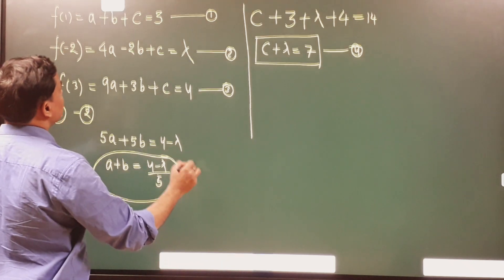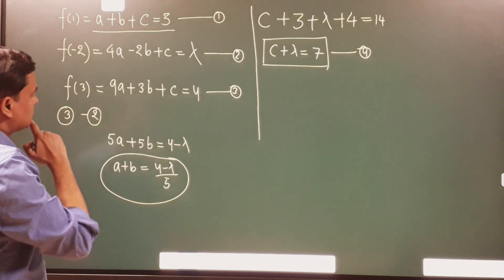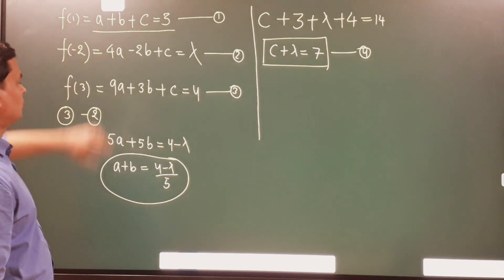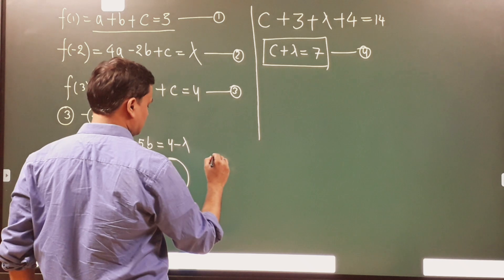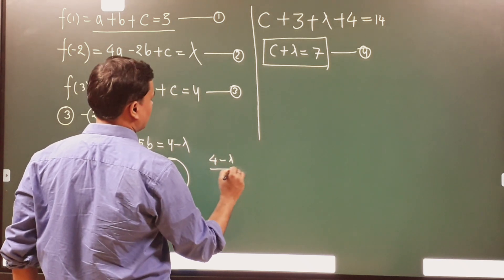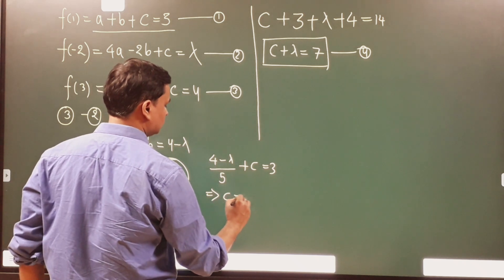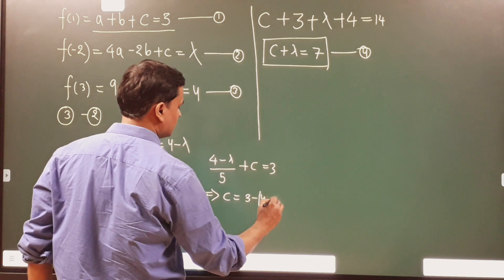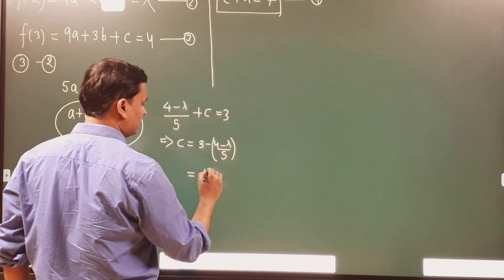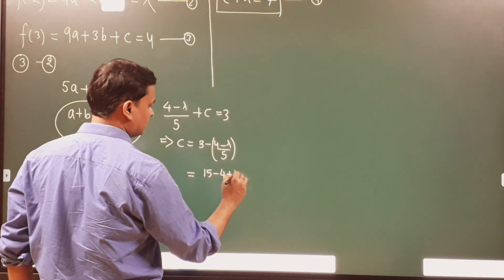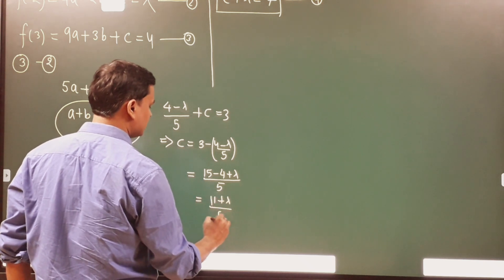Now what I will do with this value? I will put it in equation number 1 to get the value of c and get rid of a and b. Substituting in equation 1: (4 - lambda)/5 + c = 3. This implies c = 3 - (4 - lambda)/5, which gives c = (15 - 4 + lambda)/5 = (11 + lambda)/5. This is the value of c.